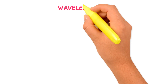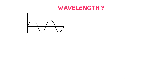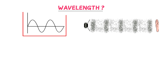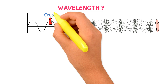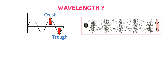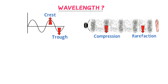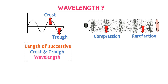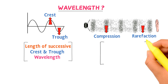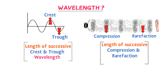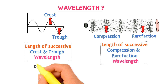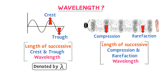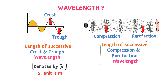Now what is wavelength? Consider the motion of these two waves. We know from the previous lecture that transverse waves travel in consecutive successive crests and troughs, while longitudinal waves travel in successive compressions and rarefactions. In case of transverse waves, the length of successive crest and trough is called its wavelength, while in case of longitudinal waves, the length of successive compression and rarefaction is called its wavelength. Wavelength is denoted by the Greek letter lambda, and its SI unit is meter.